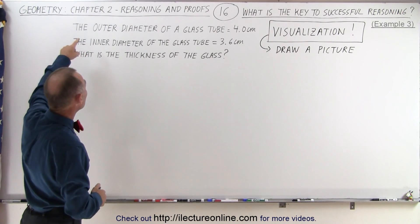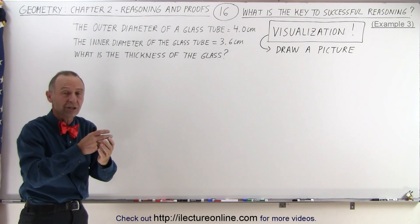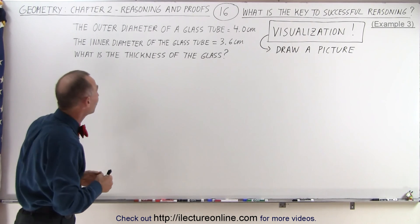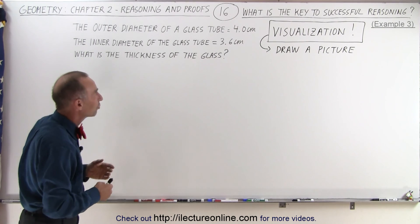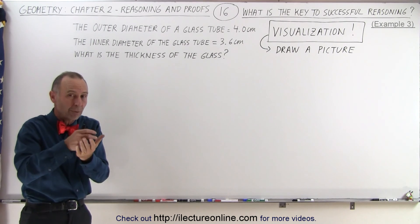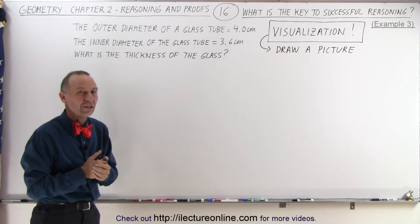They were asked to measure the outer diameter of a glass tube. So, let's say that they measured it and it was 4.0 centimeters. And then they were asked to also measure the inner diameter of that same glass tube. And let's say that they ended up with 3.6 centimeters. And then they were asked, what is the thickness of the glass of that tube?